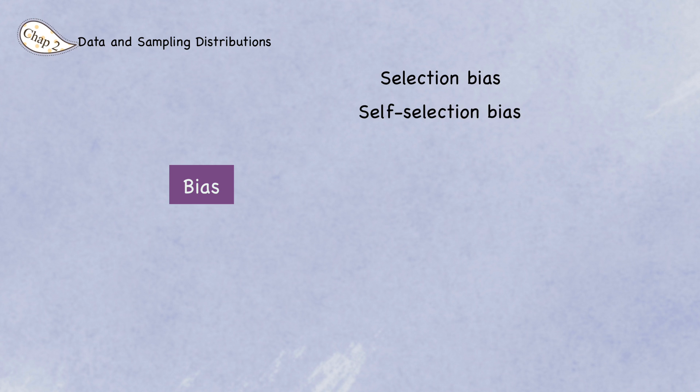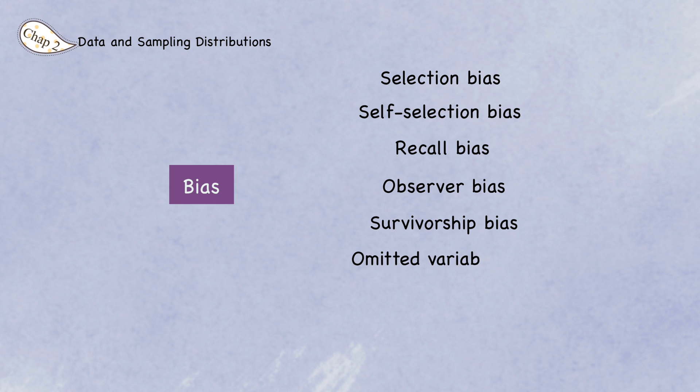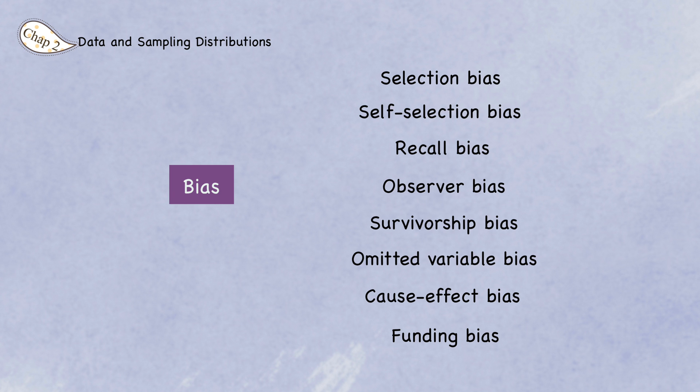There are many different types of bias. Besides self-selection bias, there is also selection bias, recall bias, observer bias, survivorship bias, omitted variable bias, cost effect bias, funding bias, cognitive bias, and so on. A link to further reading is in the description box below.